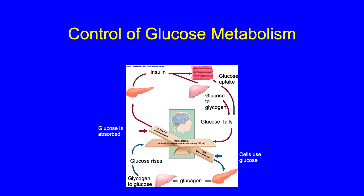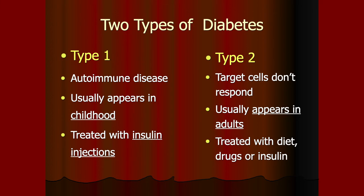Insulin lowers the amount of glucose; glucagon raises it — that's an important one to remember. The two types of diabetes: type 1 is an autoimmune disease that usually appears in childhood and is treated with insulin injections. Type 2 is when target cells don't respond, usually appears in adults, and is treated with diet, drugs, or insulin.